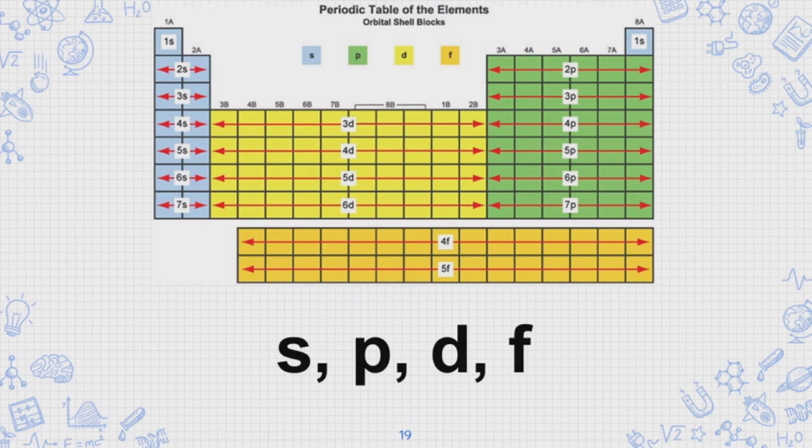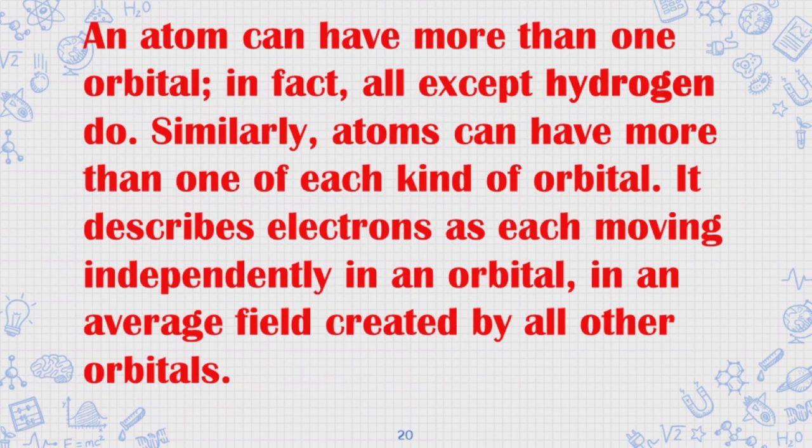These are S, P, D, F orbitals. An atom can have more than one orbital. In fact, all except hydrogen do.